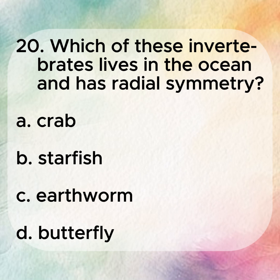20. Which of these invertebrates lives in the ocean and has radial symmetry? A. Crab. B. Starfish. C. Earthworm. D. Butterfly.